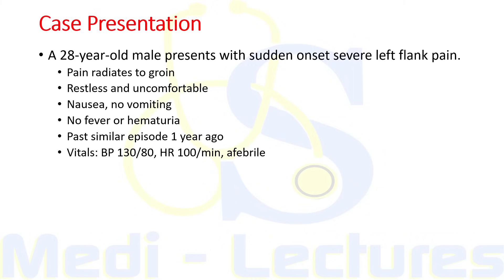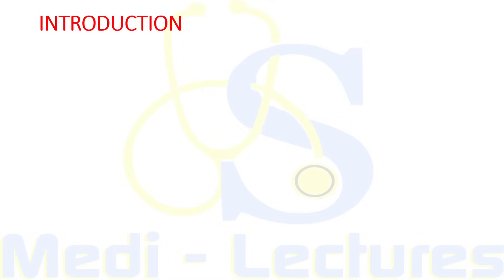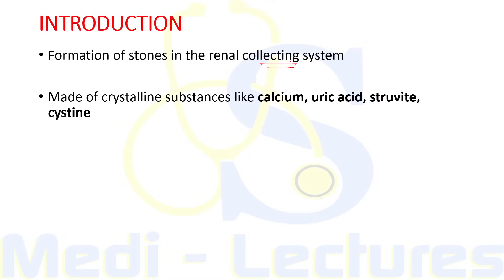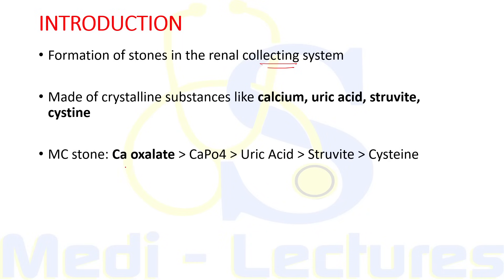We'll see how to approach this case logically using history, examination, and investigations. Nephrolithiasis is the formation of stones in the renal collecting system. These stones are made up of crystalline substances like calcium, uric acid, struvite, and cystine. The most common stone type is calcium oxalate at 75% of all stones, followed by calcium phosphate at 15%, then uric acid at 8%. Least common are struvite and cystine stones.